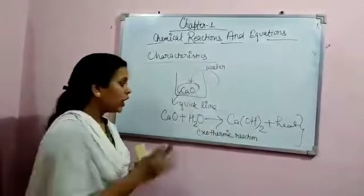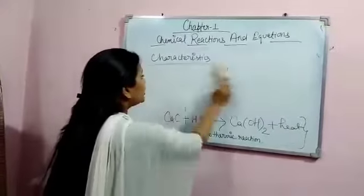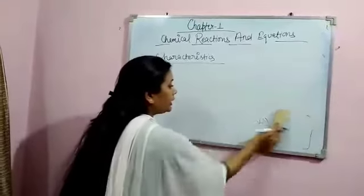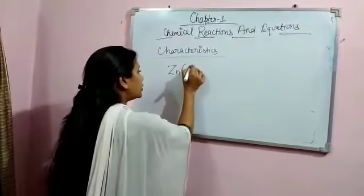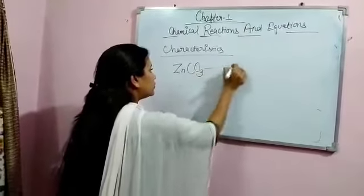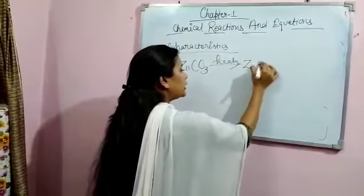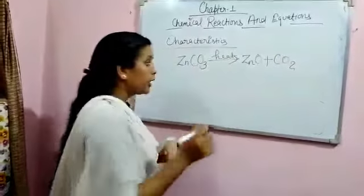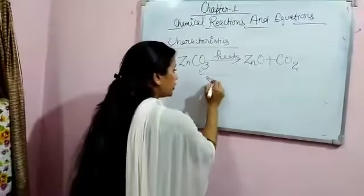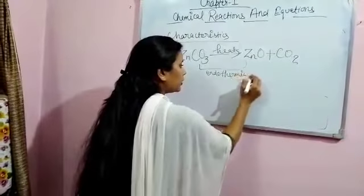Opposite of such reactions are called endothermic reactions. That means in which heat is absorbed. An example of such reaction is when we heat zinc carbonate. Zinc oxide is formed along with carbon dioxide. This is a type of endothermic reaction.